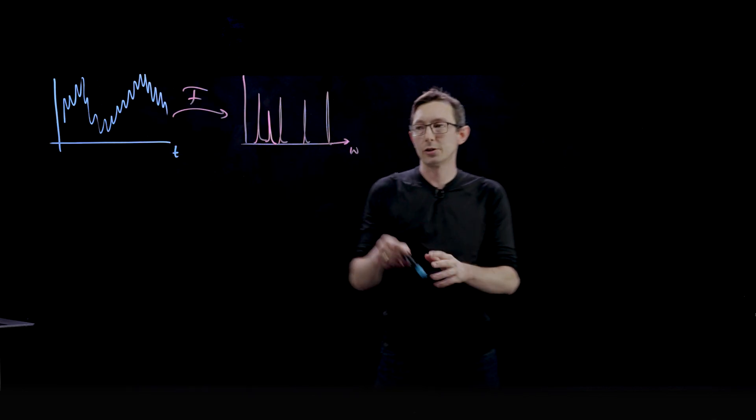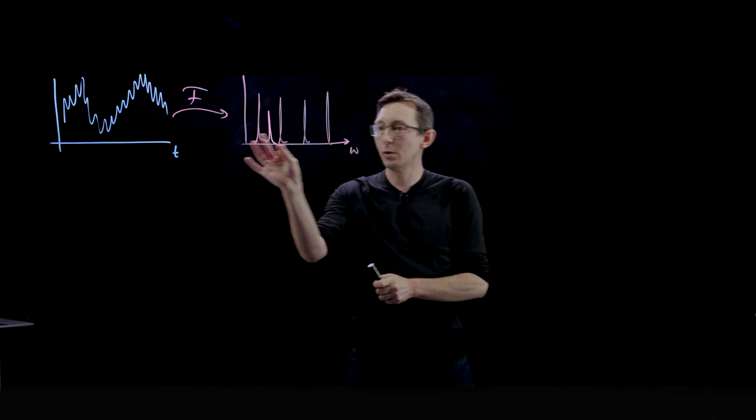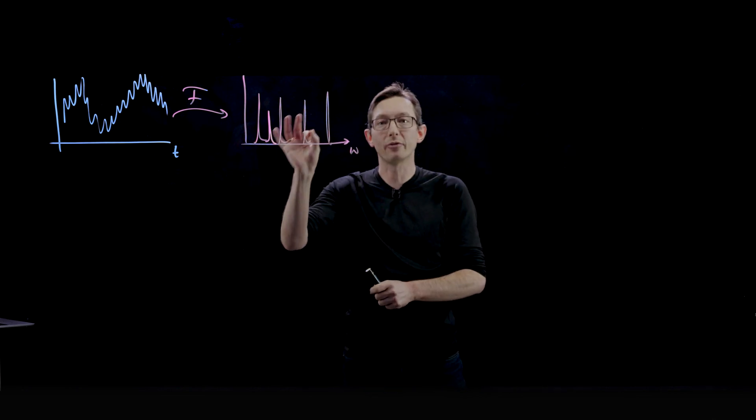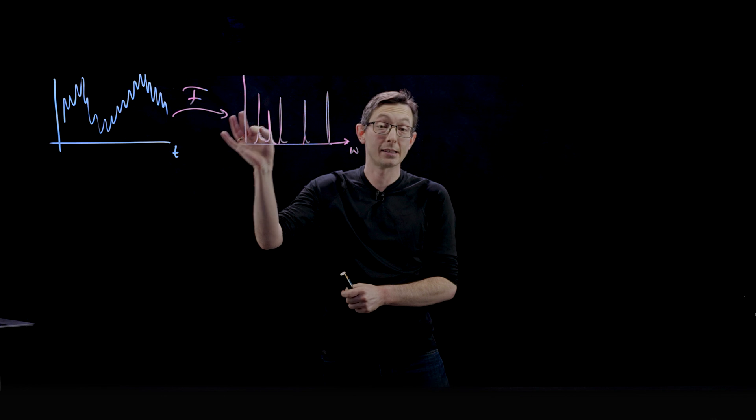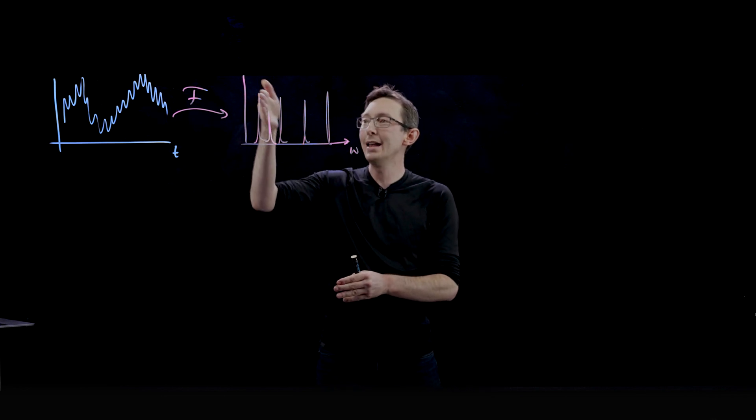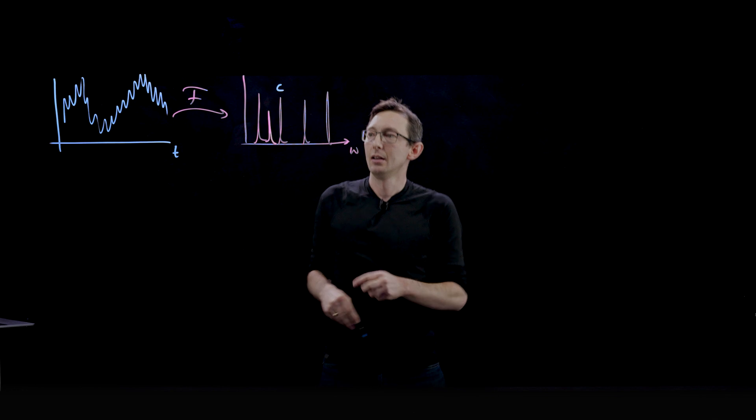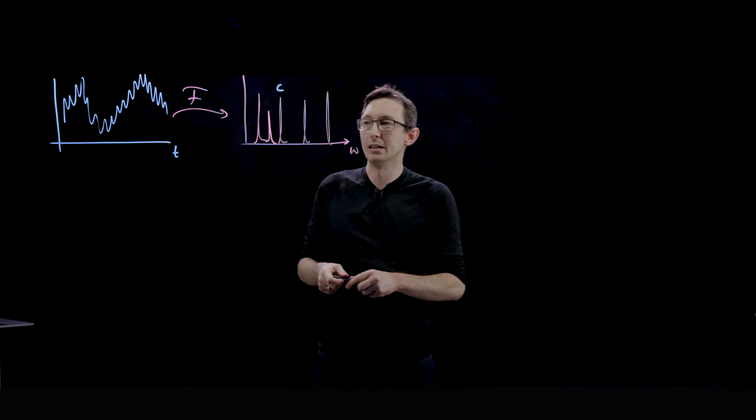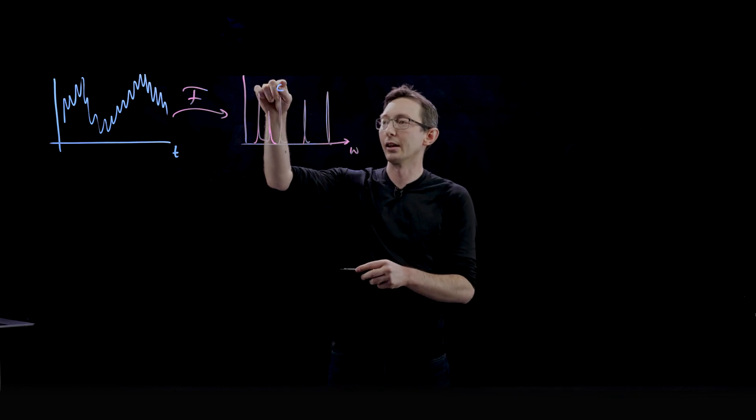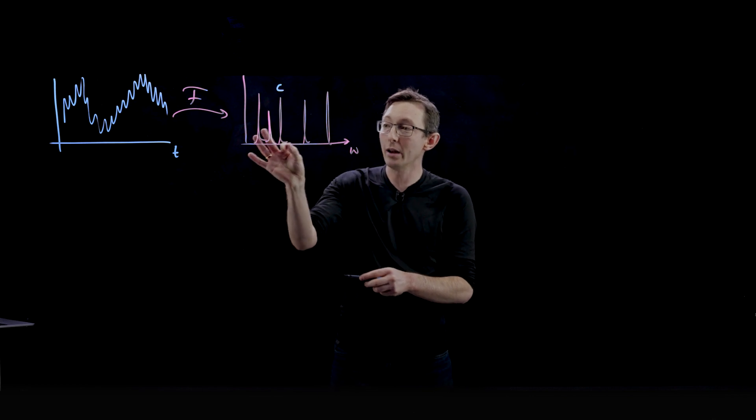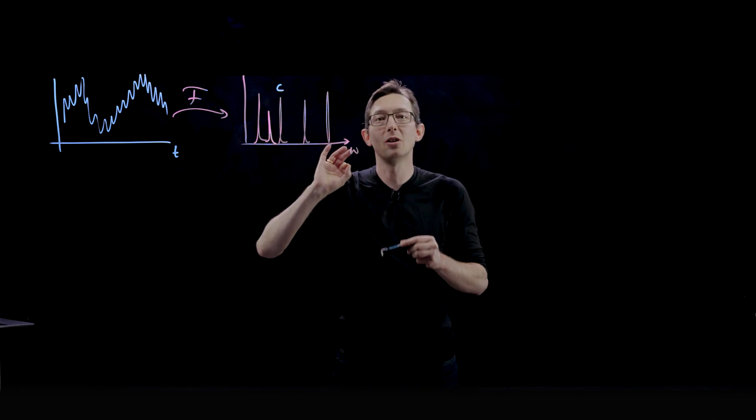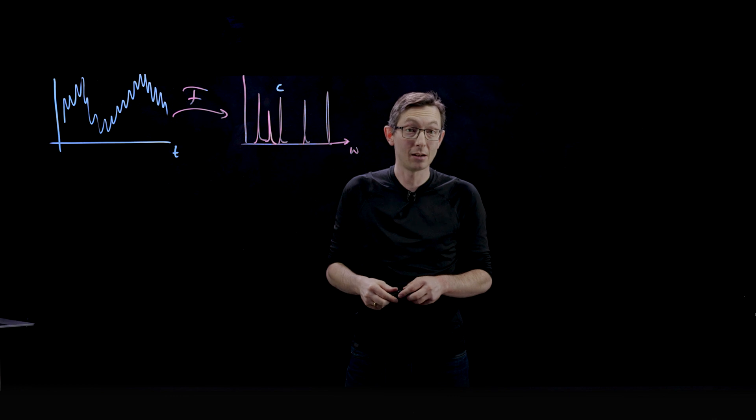Similarly, when I Fourier transform, I have exquisite information about exactly what frequencies were played in that song, but I don't know when, maybe this is the C key or a low C or something. I know exactly what frequencies were played, but I don't know when they were played in the song. That's a big problem.